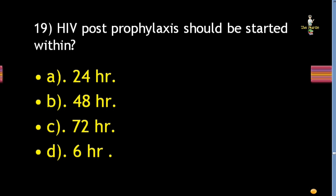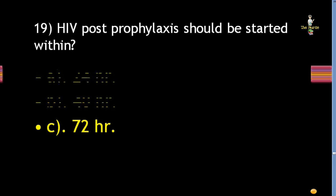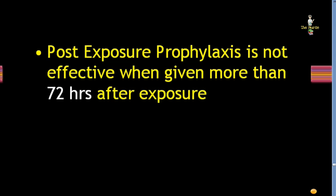Next question: HIV post-exposure prophylaxis should be started within 24 hours, 48 hours, 72 hours, or 6 hours? Correct answer is 72 hours. Post-exposure prophylaxis (PEP) is not effective when given more than 72 hours after exposure.